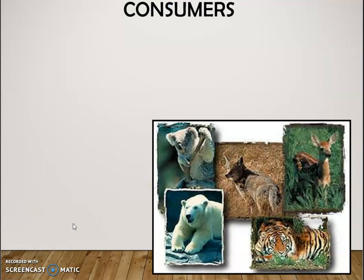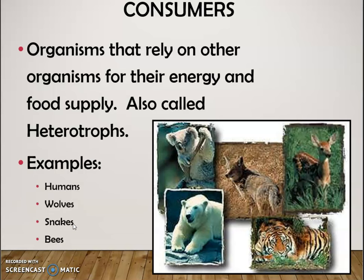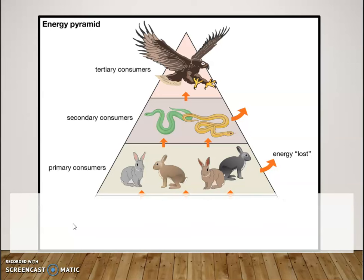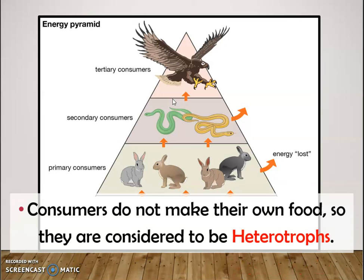Now we have something that relies on producers. We call these things consumers because they need to consume their energy — they need to eat. Consumers are organisms that rely on other organisms for their energy and food supply. They're also called heterotrophs. These would be things like humans, wolves, snakes, and bees — basically anything that is not an autotroph will be a heterotroph. Looking at this energy pyramid, we can see our consumers. Consumers can be herbivores, carnivores, or omnivores, but they rely on another organism for their energy, and because they cannot make their own food, we consider them heterotrophs.